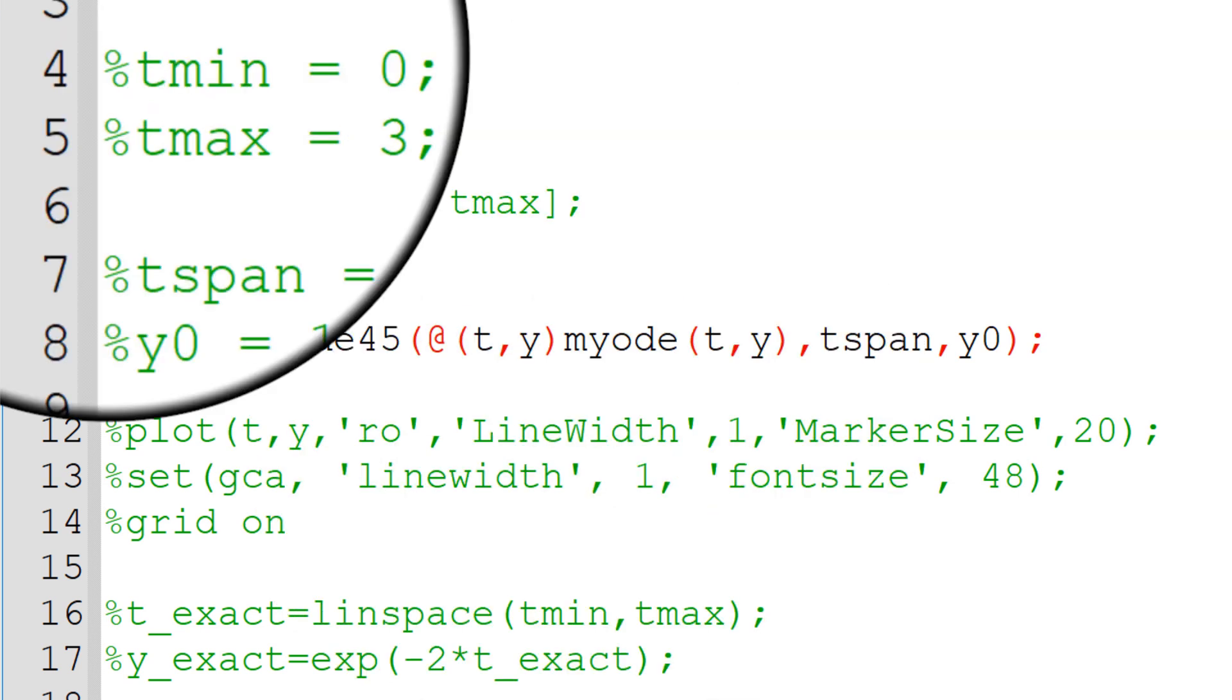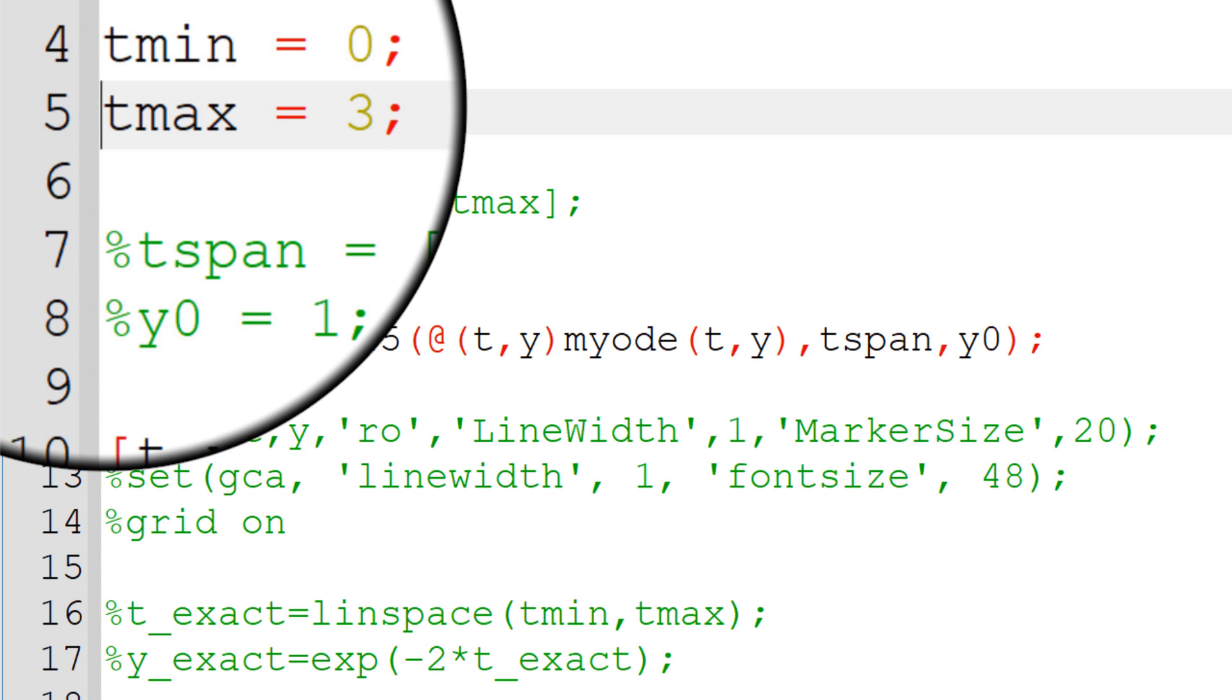Then I need to define the range of the time t to work with. I chose 0 for the lower bound and 3 for the upper bound. So I used tmin equals 0 and tmax equals 3.